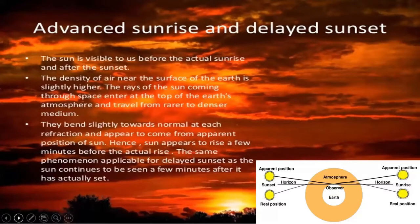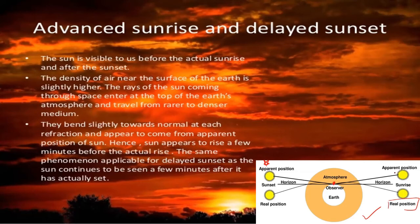If a question comes based on this — a two-mark or three-mark question — you have to write down these points along with a diagram. The diagram is very important: draw the earth, atmosphere, the observer, a straight line for the horizon, the real position of the Sun, and show the bent light ray making it appear above the horizon. Key point: the Sun is visible to us before the actual sunrise and after the sunset. The density of air near the surface of the earth is slightly higher.